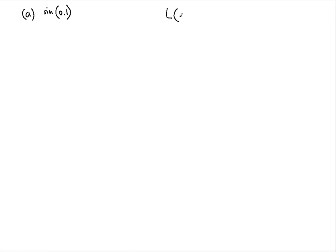In this video we're going to use linear approximations to express and estimate the given quantity. The first quantity we'll estimate is sine of 0.1. Before we do that, let's write out the formula for the linear approximation: L(x₁) = f(x₀) + f'(x₀) · (x₁ − x₀). That's the formula for the linear approximation.